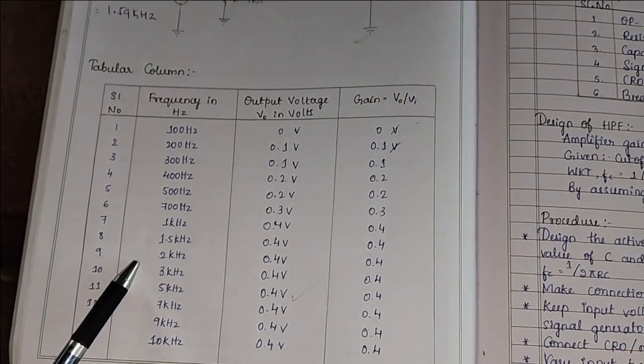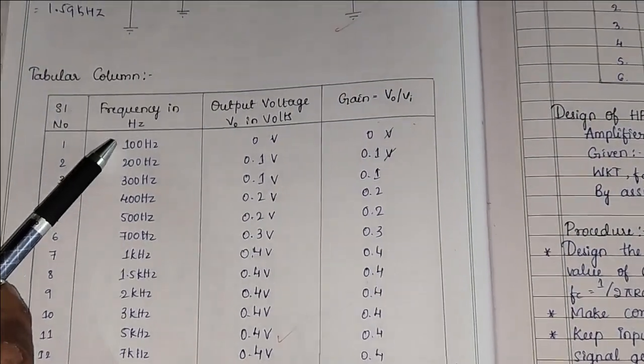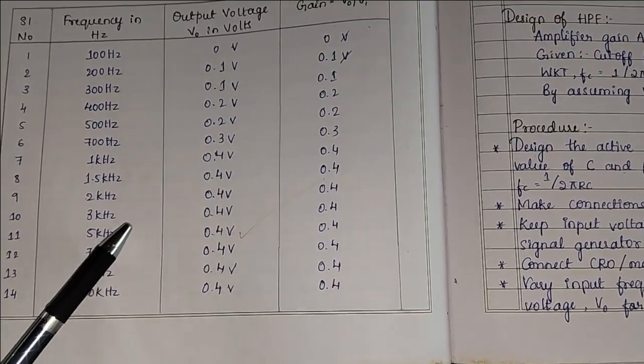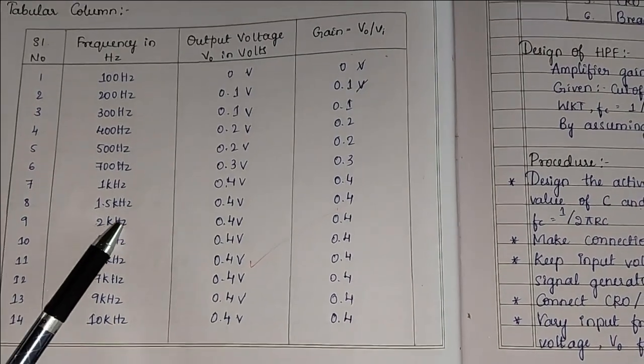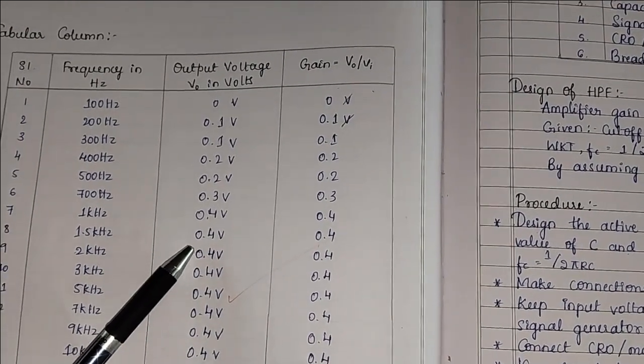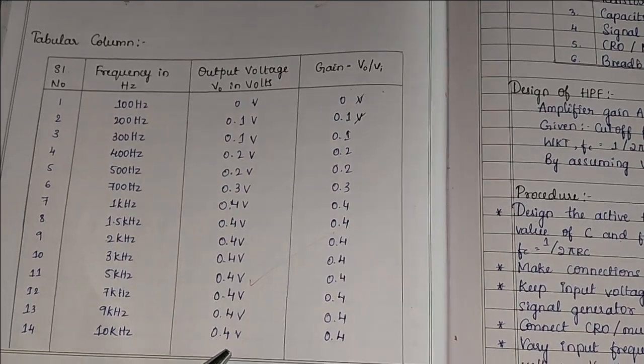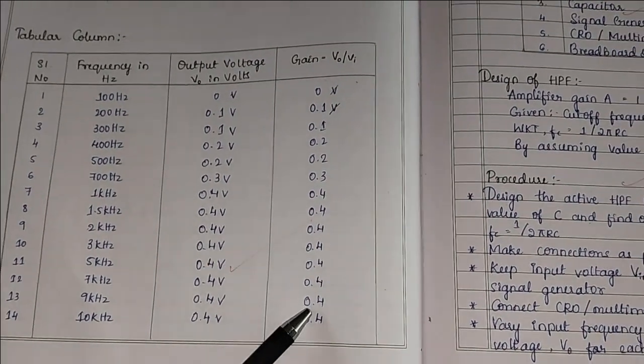In this tabular column we can observe that as we increase the frequency the output voltage also increases. Somewhere nearly cutoff frequency the output voltage is increased to 0.4 volt or sometime more than 1 volt. And we have to calculate the gain.